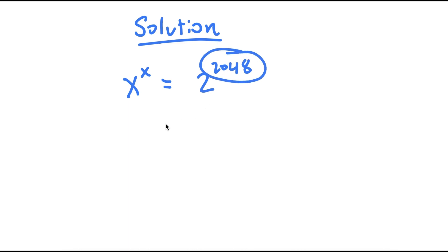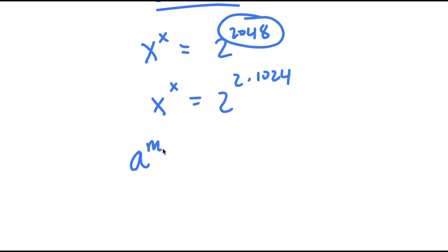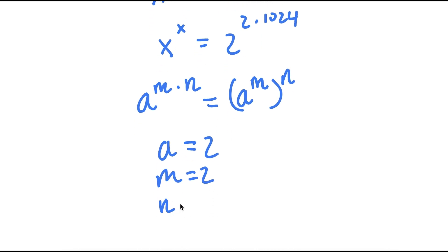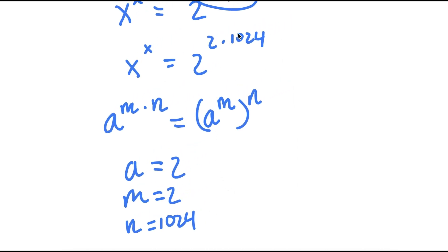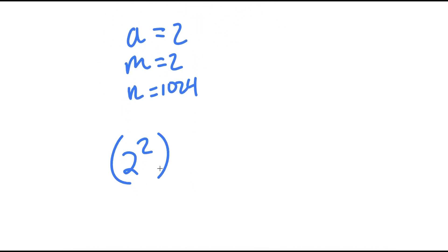I'm going to rewrite 2048 as 2 times 1024. Now, if I have something in the form a to the power of m times n, this is equal to a to the power of m to the power of n. So in this case, a is 2, m is 2, and n is 1024. So if I rewrite this in this form, I get 2 to the power of 2 to the power of 1024.